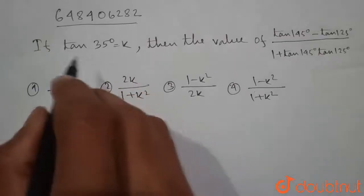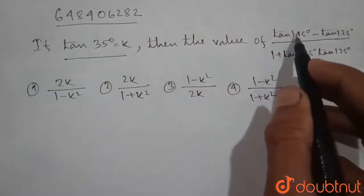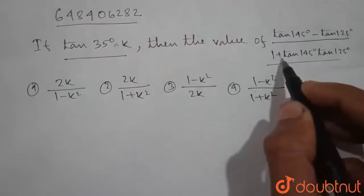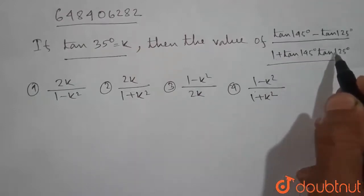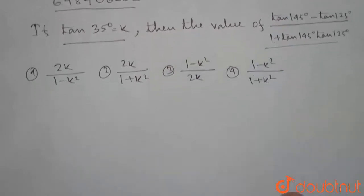Here it is given that tan 35 degrees equals K. Then we need to find the value of tan 145 degrees minus tan 125 degrees, divided by 1 plus tan 145 degrees into tan 125 degrees. Before solving the question, let us write a formula.